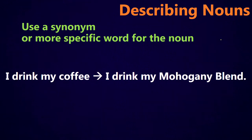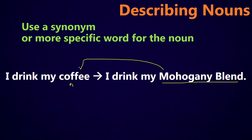Now let's look at describing nouns. We can do basically the same things. First, you can use a synonym or a more specific word for the noun. Instead of saying I drink my coffee, I can say I drink my mahogany blend — that's a blend of coffee from Caribou, one of my favorites. Rather than just saying coffee, mahogany blend tells you exactly what kind of coffee I'm drinking, because there are lots of different kinds and everybody has their favorite.